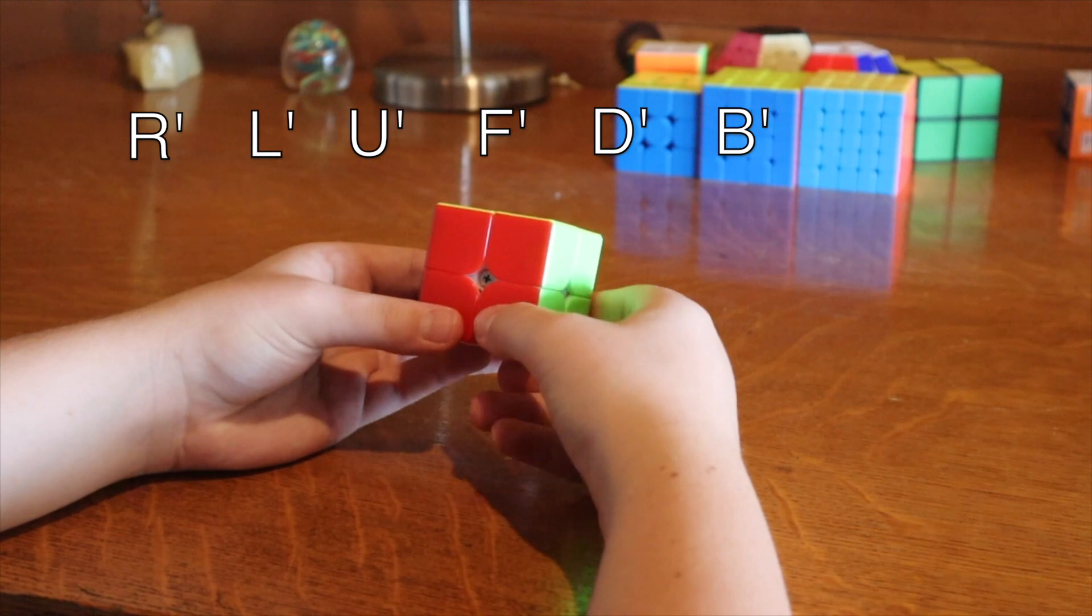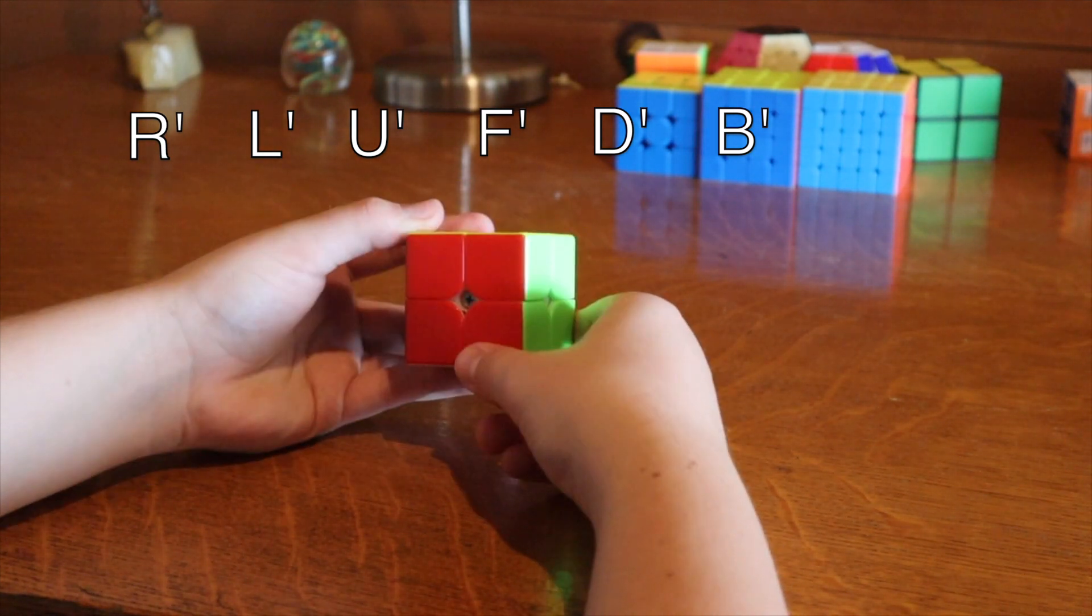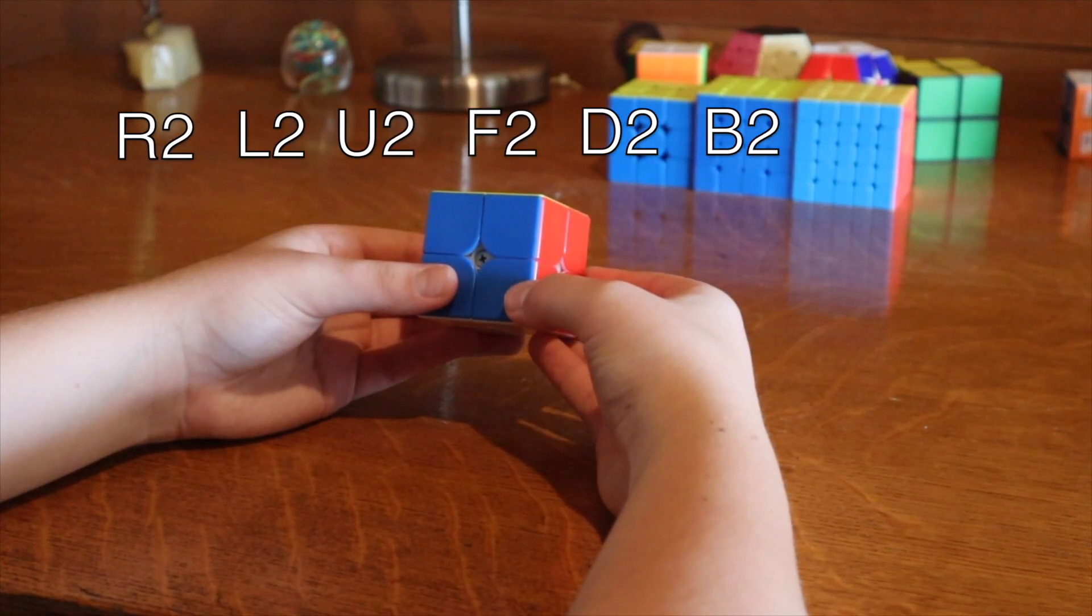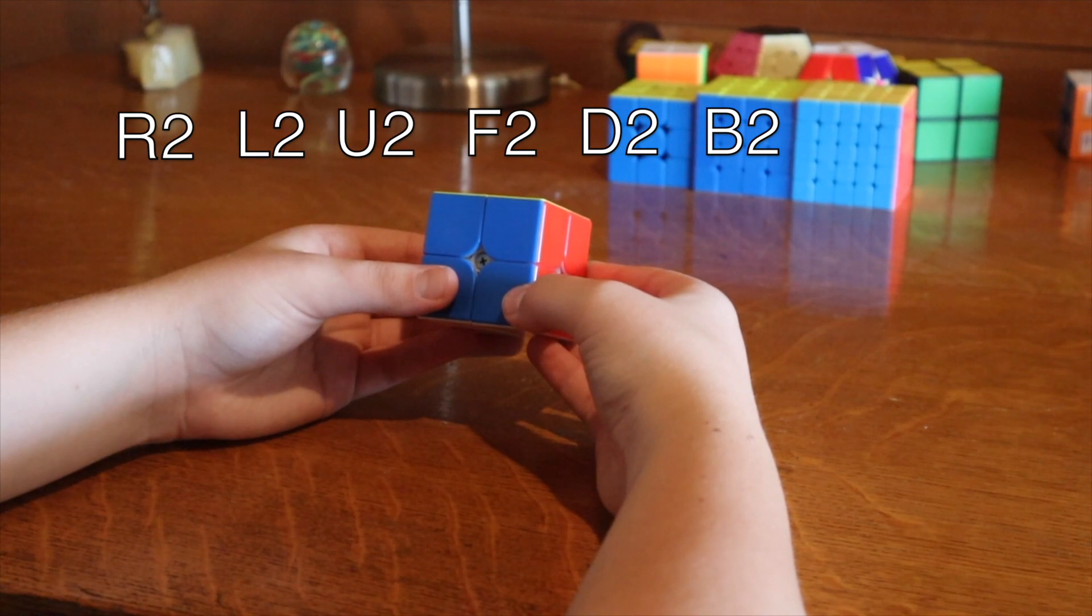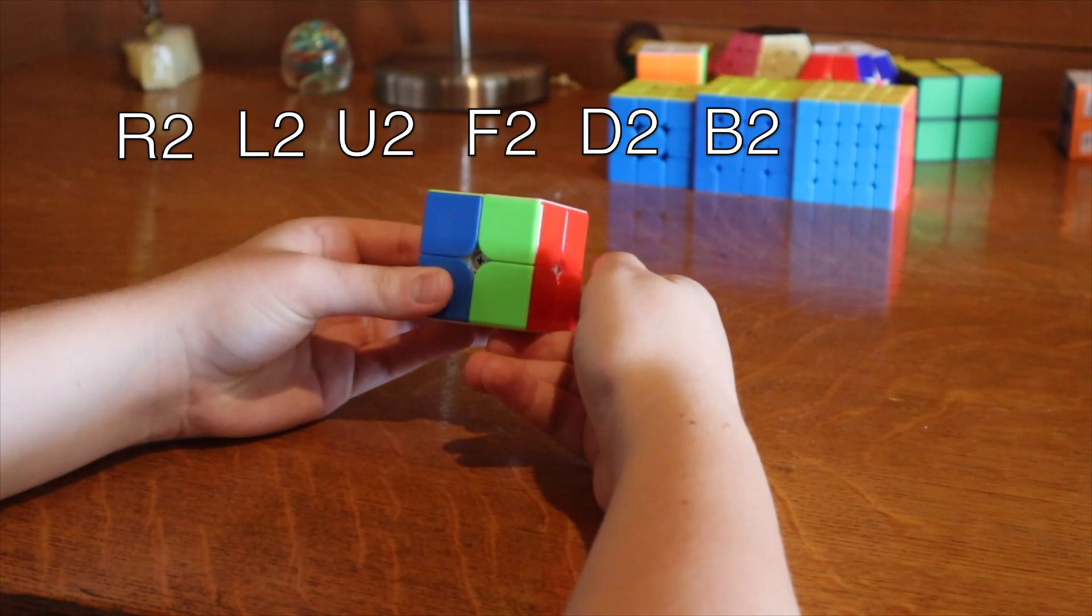So now we have R', L', U', F', D', and B'. If the number 2 is added after a letter, it changes it into a 180 degree rotation. So now we have R2, and so on.